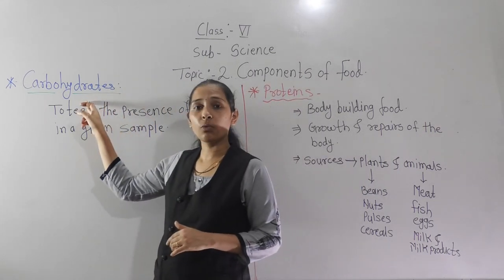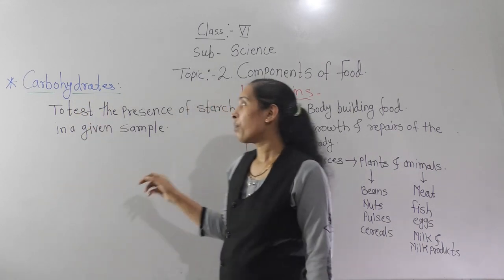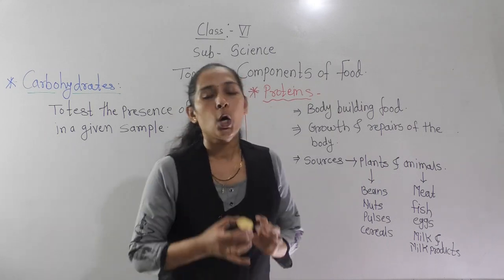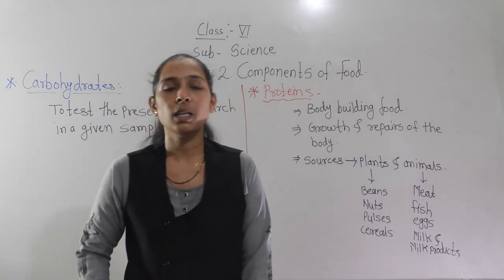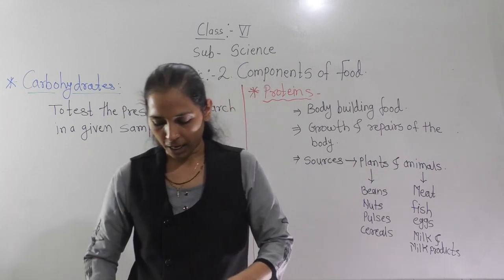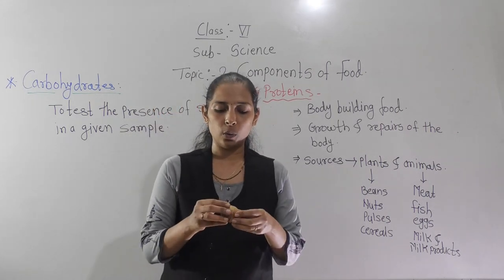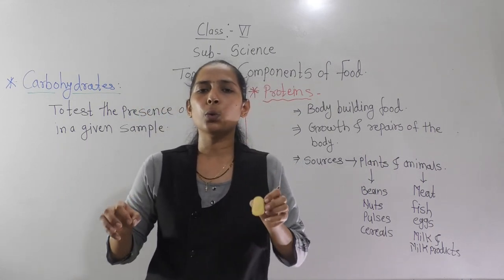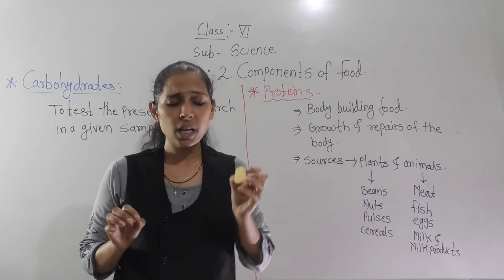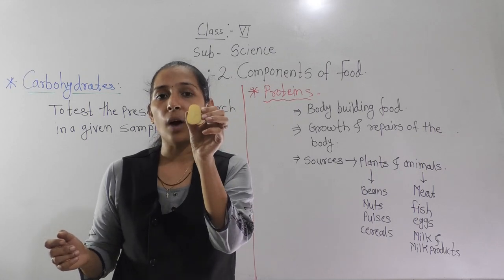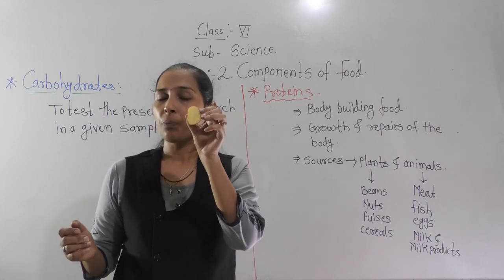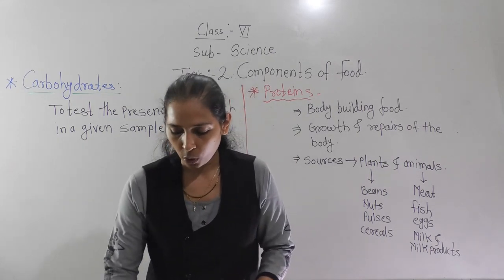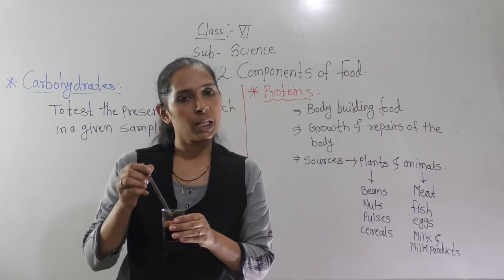Starch is nothing but one type of carbohydrate that we discussed yesterday. We can find out whether a given substance contains starch or not with the help of one activity. For that we require raw potato, iodine solution, and one dropper to do this activity.